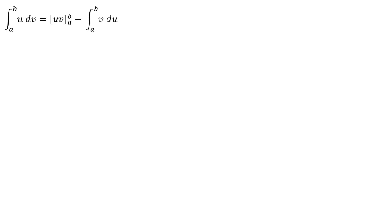Hello everyone, welcome to my channel. In this video I will explain how to solve integration by parts problems. The formula is: the integral of u dv from a to b is equal to u times v from a to b, minus the integral of v du from a to b.